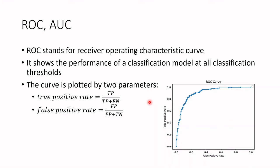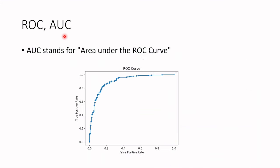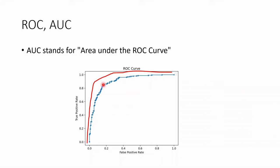Another use for the ROC curve is comparing different models — and that's where AUC comes into the picture. AUC stands for area under the ROC curve. If we have two different models, each with its own ROC curve — say the first model represented by a blue curve and the second by a red curve — the area under the blue curve is smaller than the area under the red curve. Comparing the two models, we would estimate that the model represented by the red curve is probably better.